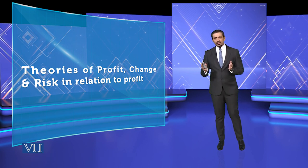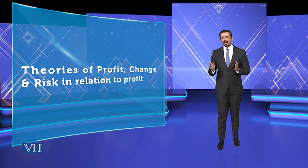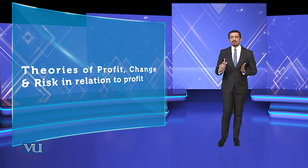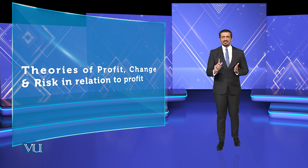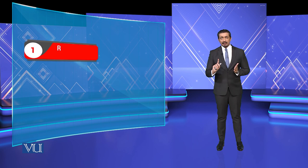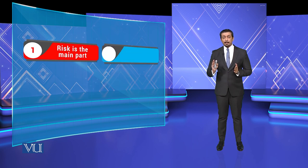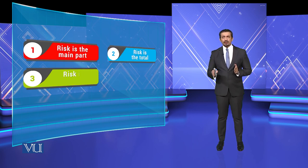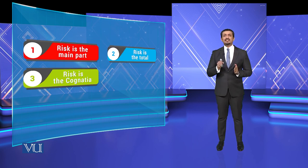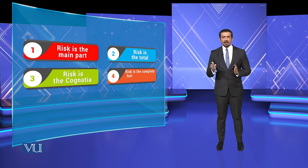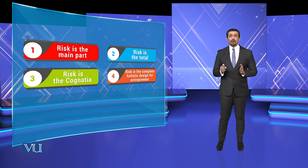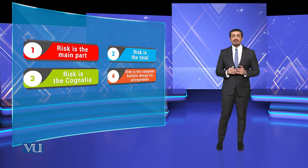Our dependency is totally on risk, not on profit. Profit's dependency belongs to those who do business. Risk is the main part — risk is total, risk is cognizant, risk is the complete holistic design.